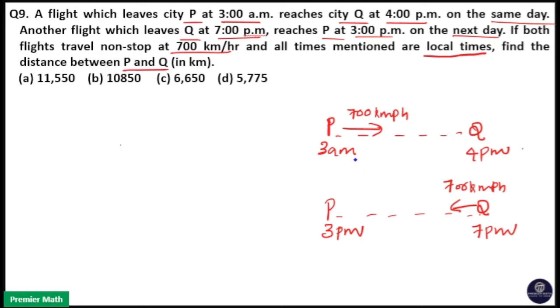So, here the difference between 3 a.m. to 4 p.m.: 3 plus 7 is equal to 10, 10 plus 6 is equal to 16, 16 is equal to 4 p.m. So, 7 plus 6, 13 hours is the time duration for the P to Q flight.